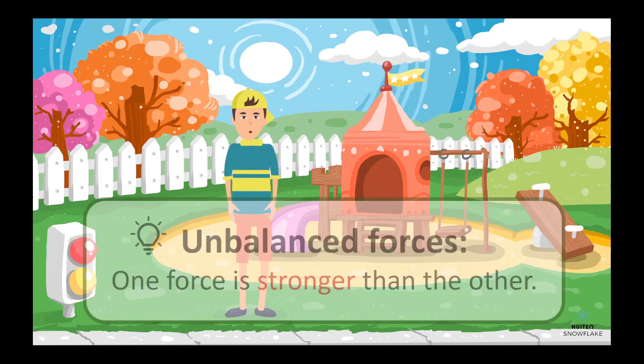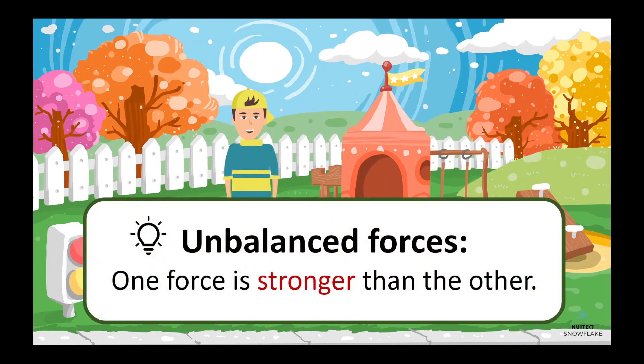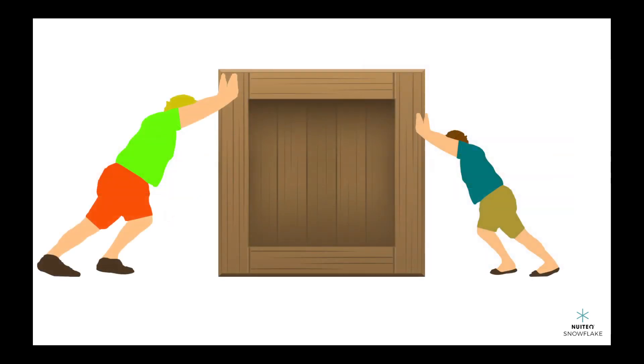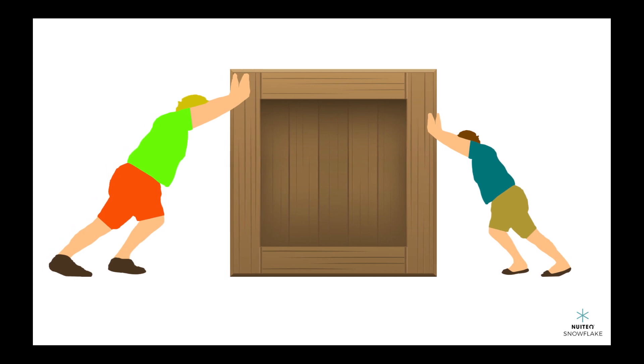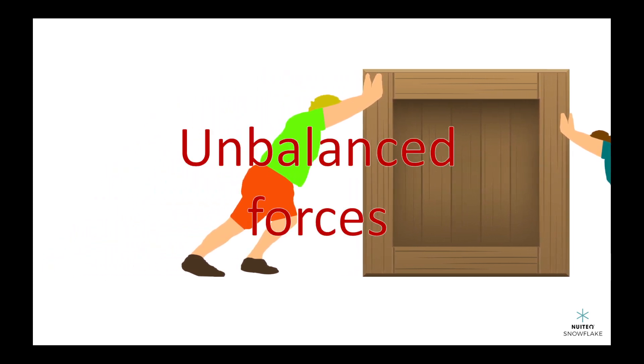On the other hand, unbalanced forces are when one force is stronger than the other force. This means that the forces don't cancel each other out, and the object moves. It's like when you and your friend are pushing a box, but your friend is stronger than you, and the box moves in their direction. That's unbalanced forces.